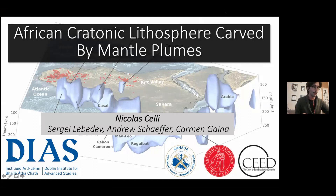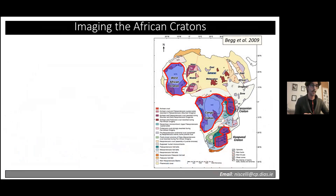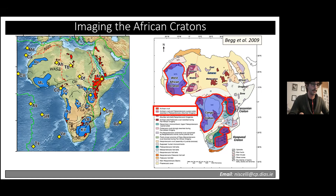Africa is one of the continents with the largest amount of Paleoproterozoic and Archean rocks on outcrop, forming the cores of a few well-defined cratons: the West African, the Congo, the Tanzania, and the Kapval cratons. However, the actual outcrops of Archean rocks are much smaller, as seen in the blue polygons on the map, leaving huge gaps where other geophysical studies — typically seismic tomography — interpret larger extensions, typically underneath very large basins.